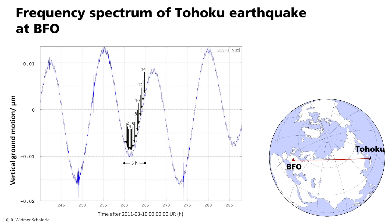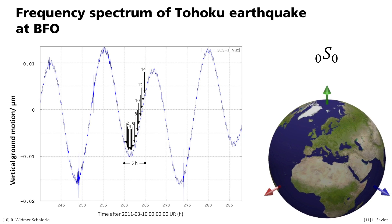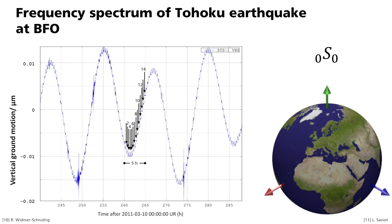Hence, what we have here is the spheroidal breathing mode 0S0, which has the largest amplitude of all of the earth's normal modes. In this case, Rayleigh waves traveling around the earth in opposite directions interfere constructively to create purely radial expansion and contraction.